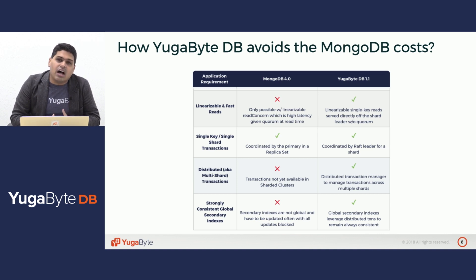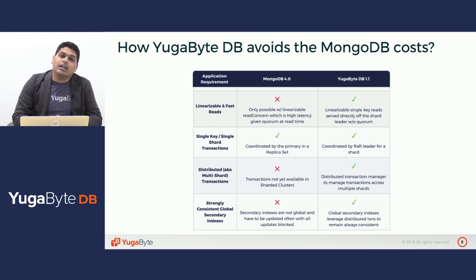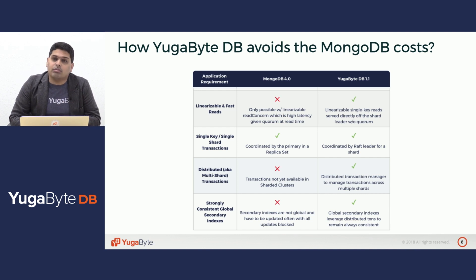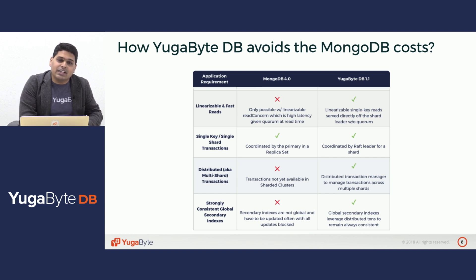That is essentially the heart of single-row ACID inside YugabyteDB. YugabyteDB goes one step further with multi-shard ACID that is built into both its YCQL and YSQL APIs, to ensure that as your data volume grows and you keep adding nodes, you don't have to give up multi-shard transactions and your development velocity continues to remain uninterrupted. Last but not the least, the ability to have global secondary indexes ensures that you can build applications much faster using secondary key-based queries, as opposed to always being forced to put all the data together in a single document and avoid the need for secondary indexes.